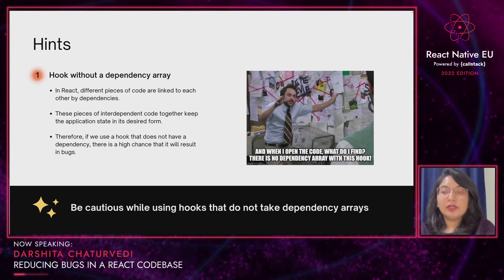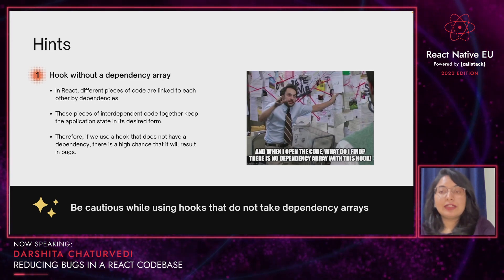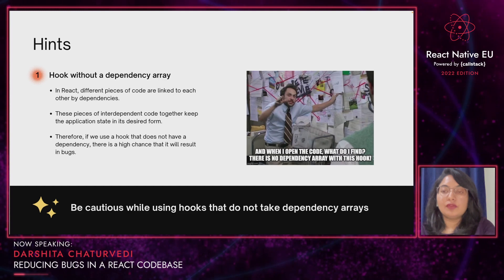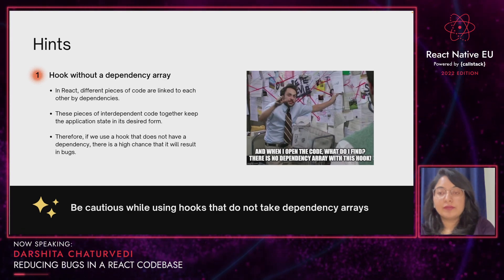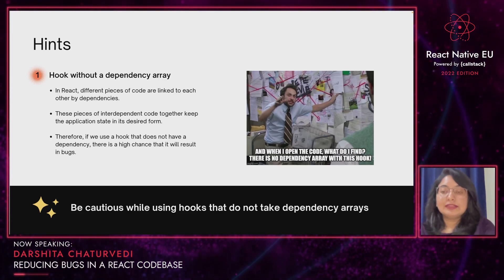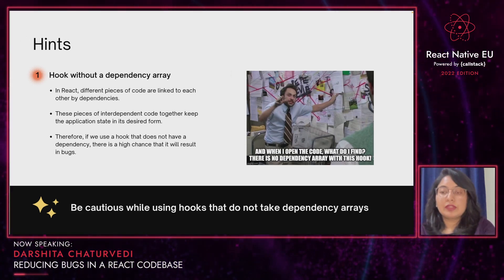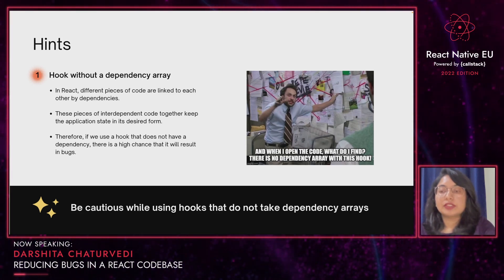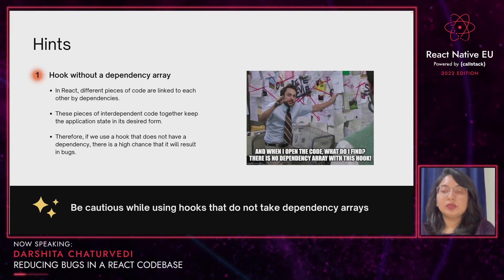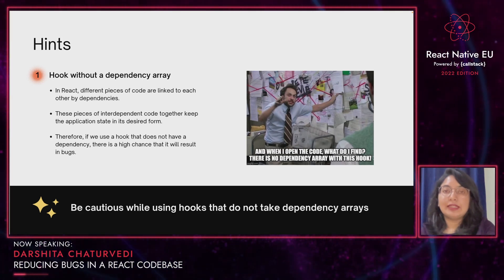The central theme comes from official React documentation: our React code should be independent of the sequence in which components will render and when they will render. We use this theme to codify hints that are easy to remember and can lead us to identify anti-patterns. We think of a React codebase as a collection of interdependent pieces of code. Hence, if a code's dependency relationship cannot be established, there is a high likelihood that it will result in bugs. So the key takeaway is to be very cautious while using hooks such as useState, useRef, etc., that do not take dependency arrays.